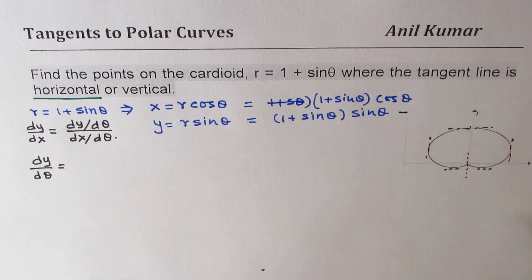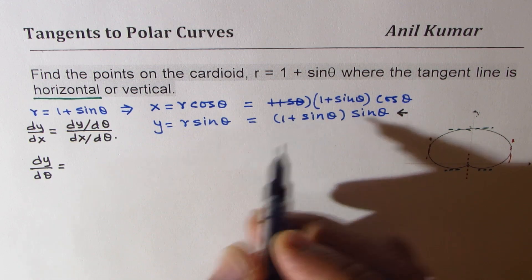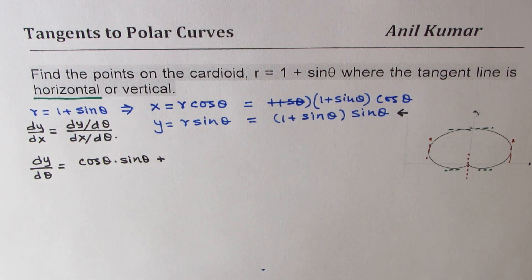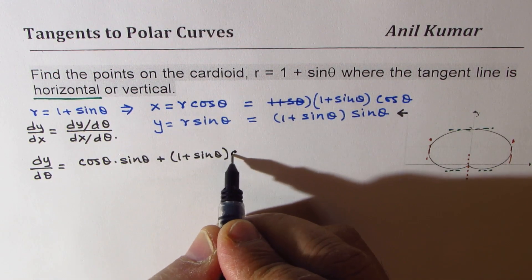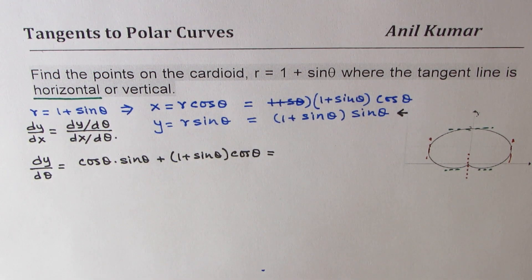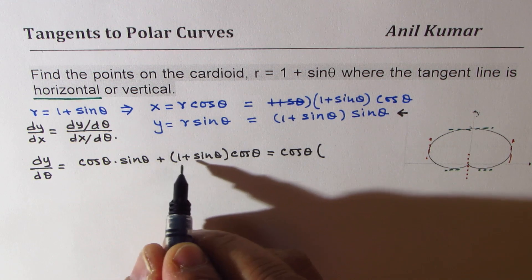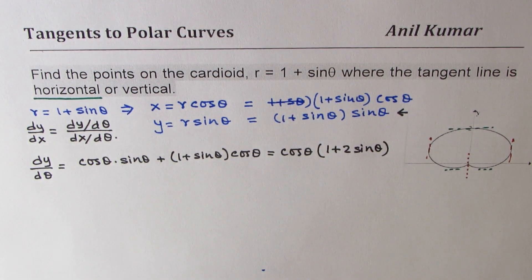We differentiate the y equation — 1 plus sine theta times sine theta — using the product rule. The derivative of 1 plus sine theta is cosine theta, so we get cos theta times sine theta plus 1 plus sine theta times derivative of sine theta, which is cos theta. Taking cos theta as a common factor, we get sine theta and 1 plus sine theta, giving 1 plus 2 sine theta. So dy/dθ = cos theta times (1 plus 2 sine theta).